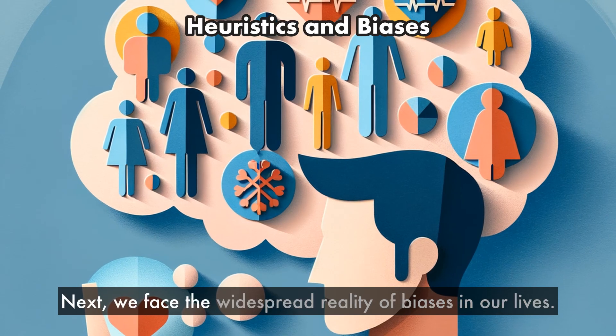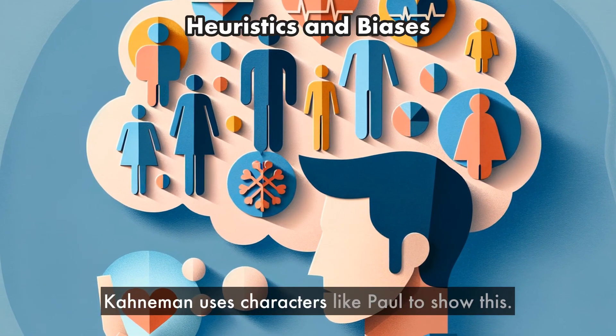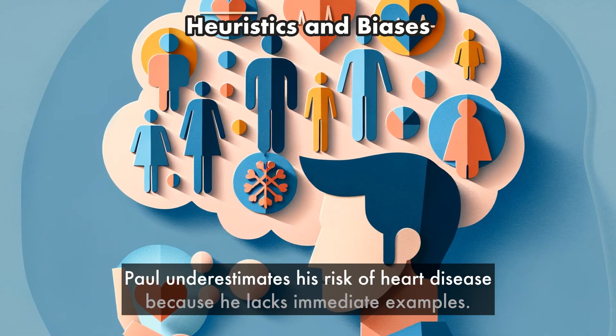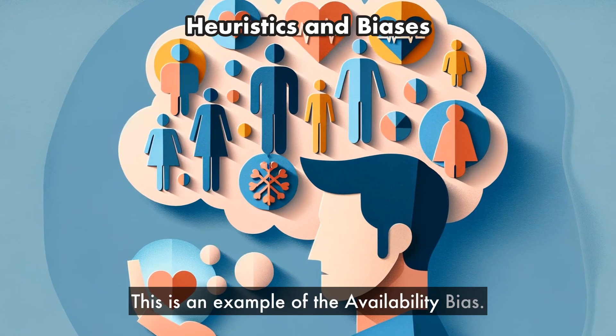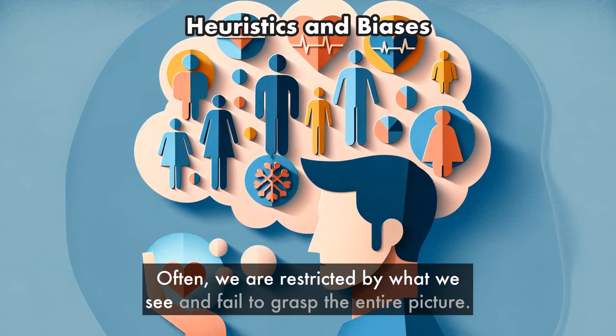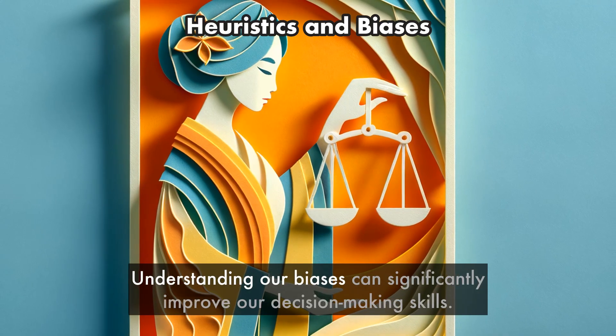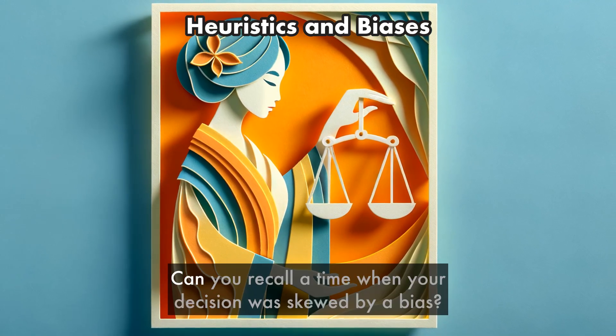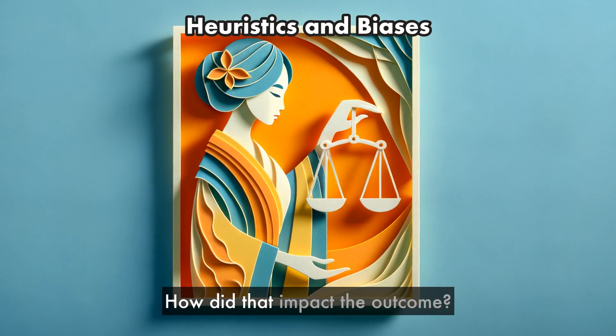Next, we face the widespread reality of biases in our lives. Kahneman uses characters like Paul to show this. Paul underestimates his risk of heart disease because he lacks immediate examples. This is an example of the availability bias. Often, we are restricted by what we see and fail to grasp the entire picture. Understanding our biases can significantly improve our decision-making skills. Can you recall a time when your decision was skewed by a bias? How did that impact the outcome?